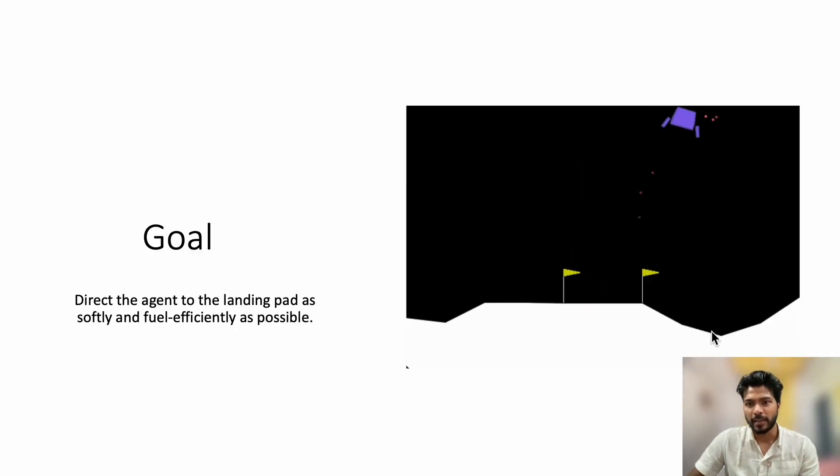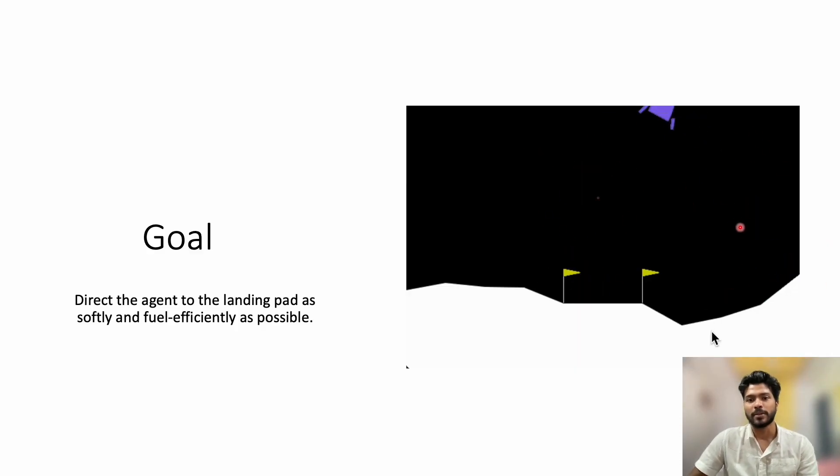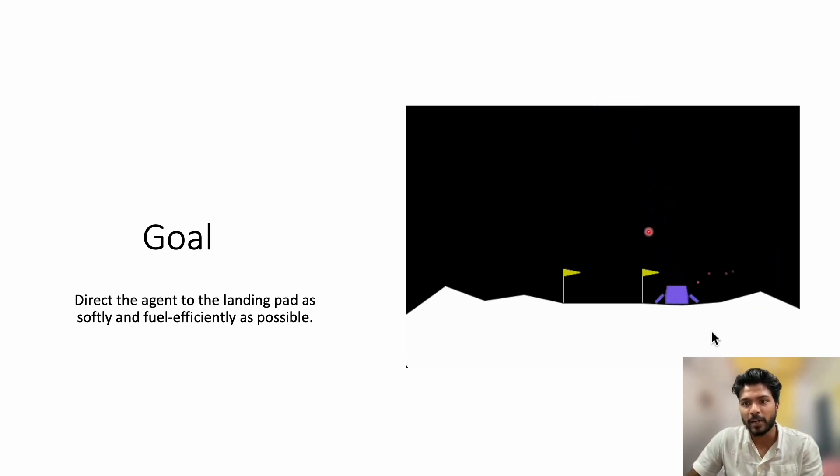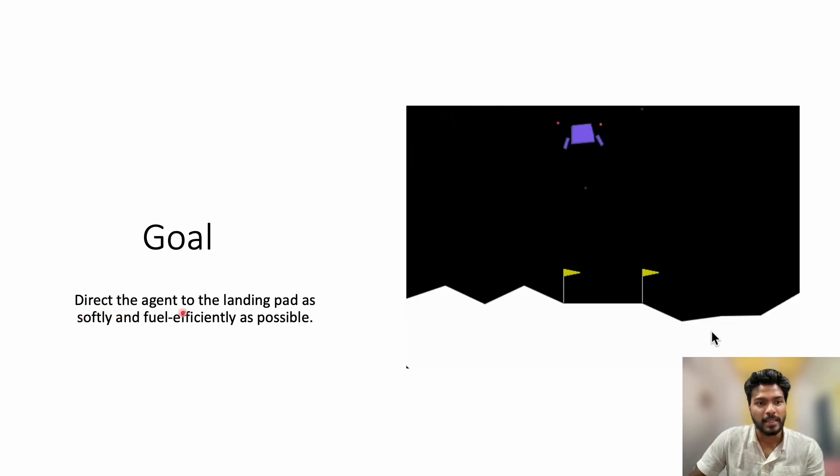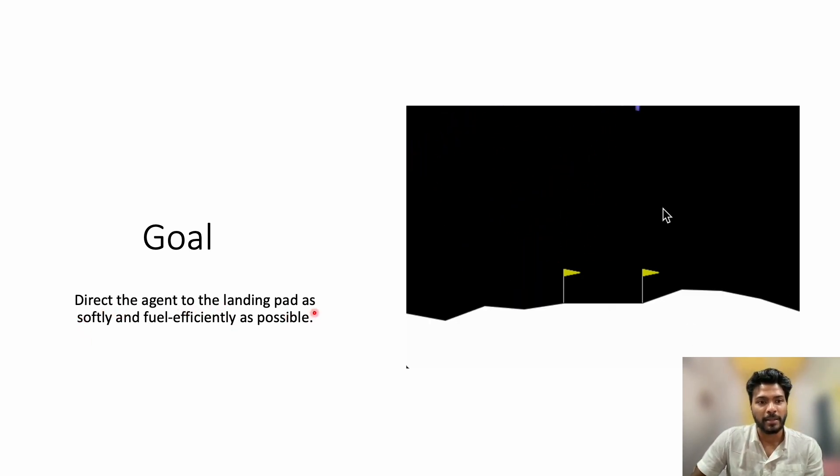In this project, we have a lander which attempts to land on the moon's surface. The moon has some gravity. An initial force is applied on the lander. The goal of the project is to direct the agent, i.e. the lander, to the landing pad as softly and fuel efficiently as possible.